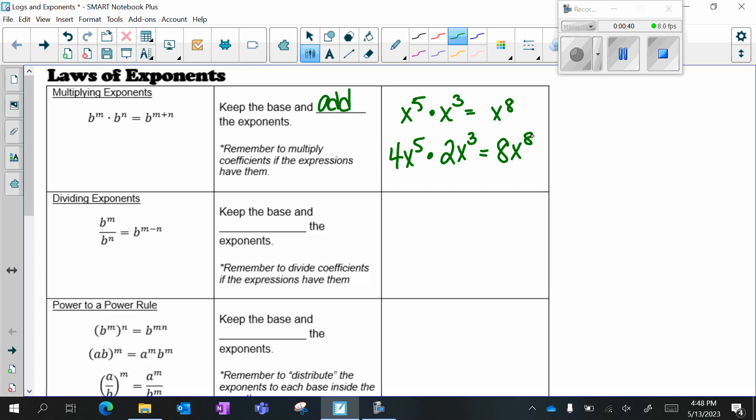When I'm dividing, we keep the base and we subtract the exponents. So x to the ninth divided by x squared, nine minus two gives me x to the seventh. But once again, if I have something like 10x to the ninth over 2x to the second, I need to do 10 divided by two, which gives me five, and then I can work with my exponents.